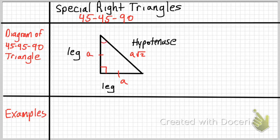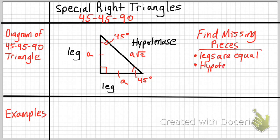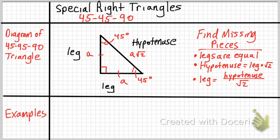This is a 45-degree angle and this is also a 45-degree angle. So if I'm trying to find a missing component: the legs are always equal, so if I give you one leg you can find the other. The hypotenuse is equal to a leg times the square root of 2. And given a hypotenuse, a leg is equal to the hypotenuse divided by the square root of 2 — this is where we get into our radicals from last week.